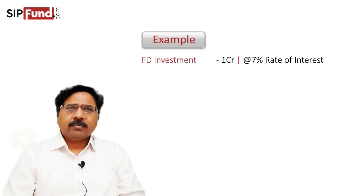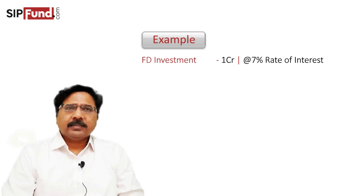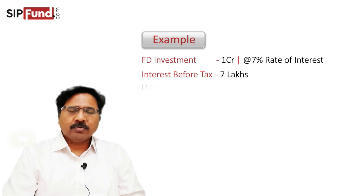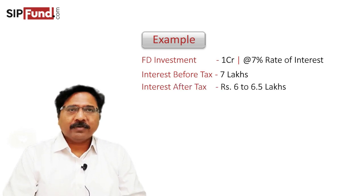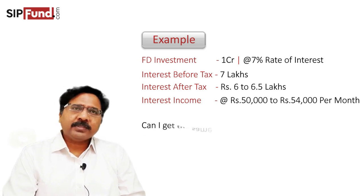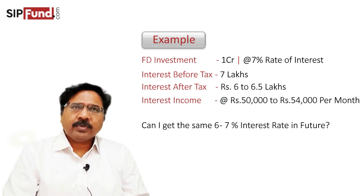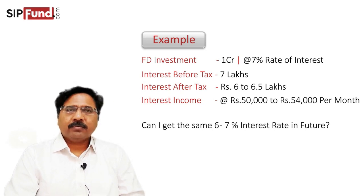Consider an example where you have a 1 crore investor in an FD. At the current FD rate, some banks are giving 6%, some are giving 7%. Taking 7% as our example, on a 7% rate you would be getting 7 lakhs per year pre-tax. Post-tax it could work out to something like 6.5 or 6 lakhs, which is a comfortable 50,000 per month. Now, would this continue to be 6% or 7% ten years down the line? Would you still get an FD rate of 7%?